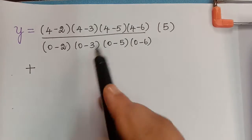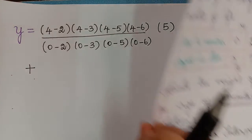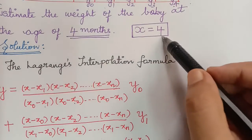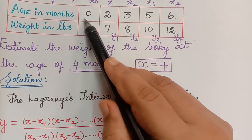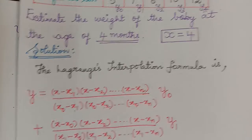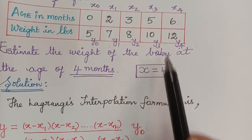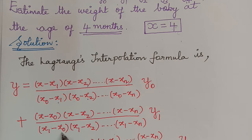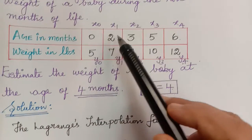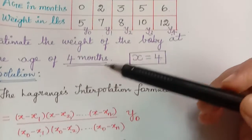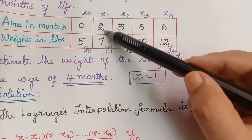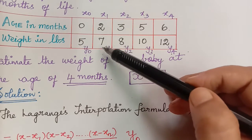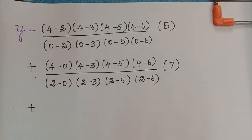For the second term, x1 is left out of the numerator, so we have x minus x0, then leaving x1, then x minus x2, x minus x3, x minus x4. With x equal to 4 and x0 equal to 0, the numerator is 4 minus 0, then 4 minus 3, 4 minus 5, 4 minus 6. The denominator is x1 minus x0, x1 minus x2, etc. so 2 minus 0, 2 minus 3, 2 minus 5, 2 minus 6, and this full term is multiplied by y1 which is 7.